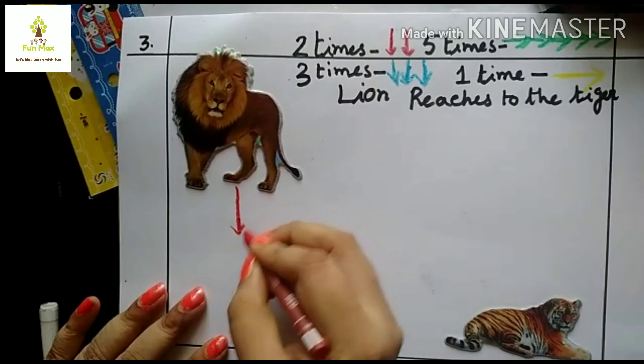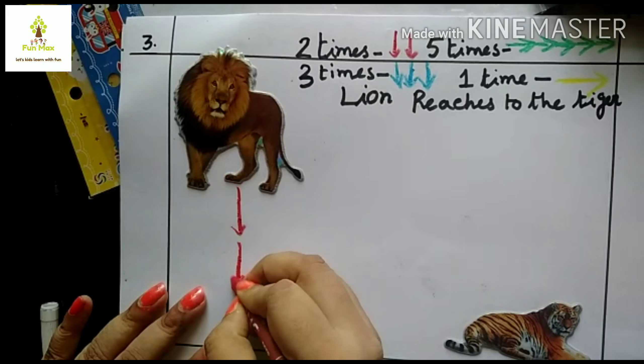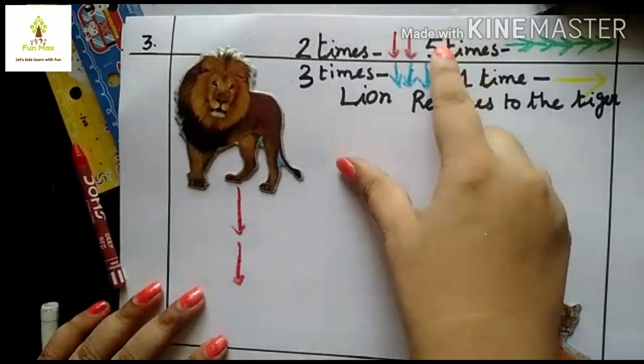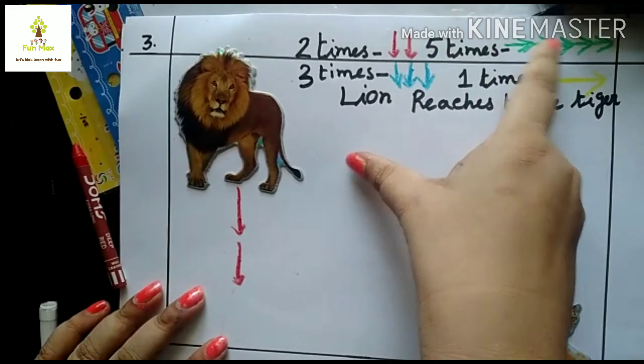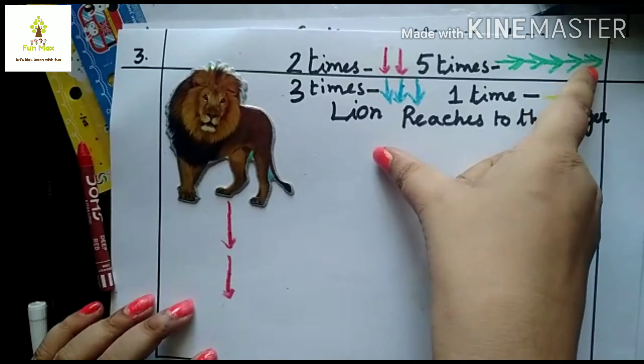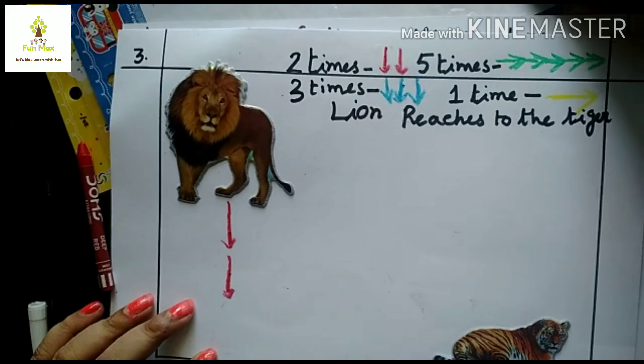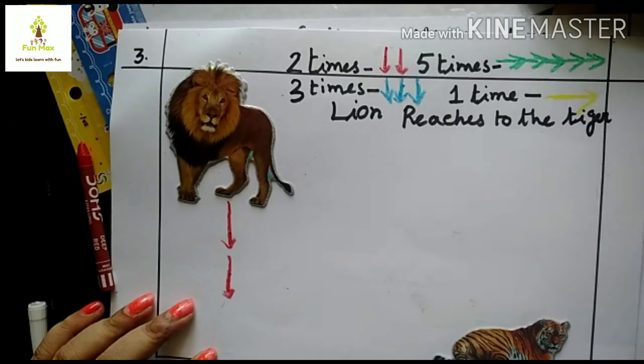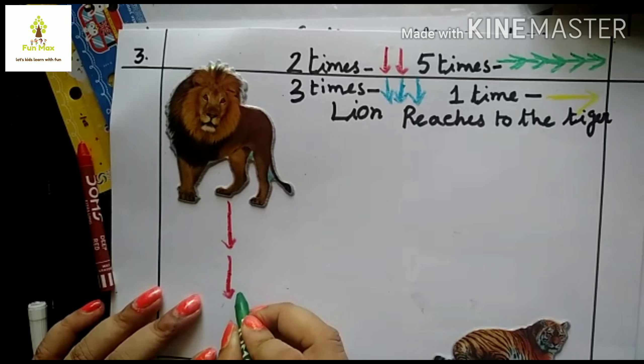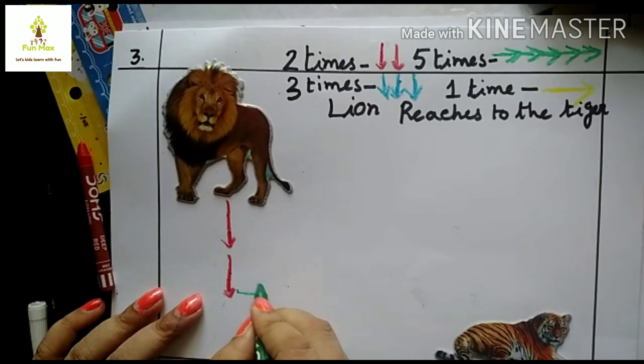Five times green arrow. One, two, three, four, five. Five times green arrow. Here, by this activity, kids find the color and counting the times and put the directions in a proper way. And this is a coding activity.